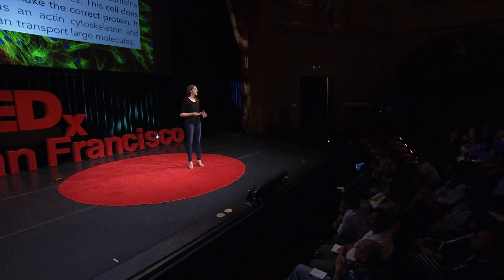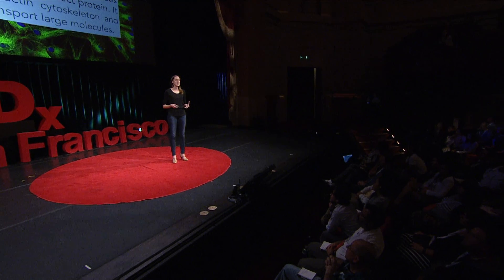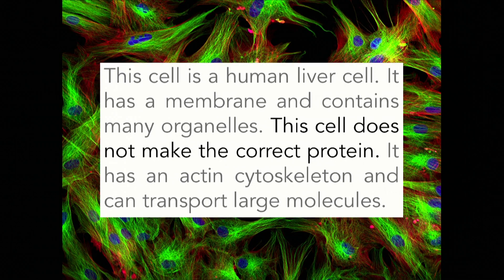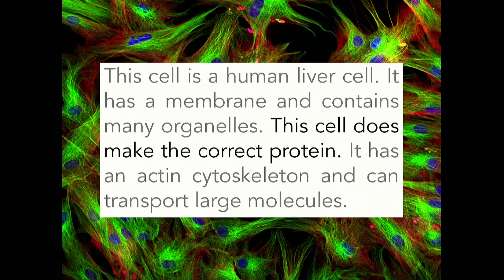Let's pretend this is a little snippet of DNA inside of our cell. This cell has a problem — it has an extra word in its genome: the word 'not.' This means the cell does not make the correct protein. Using CRISPR-Cas9, researchers can directly target that word 'not,' cut it out, and leave the cell with the correct sequence, allowing it to make the correct protein.